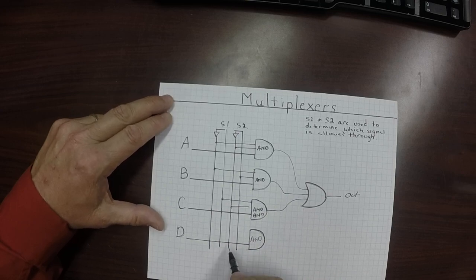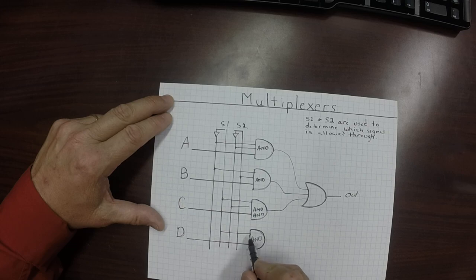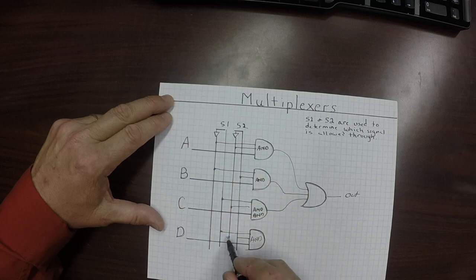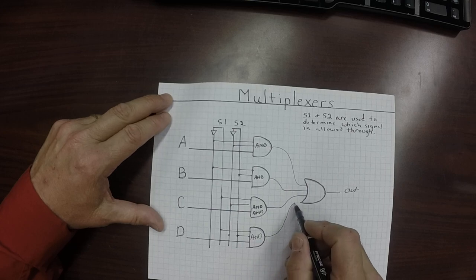Finally we have D and we want those to be 1 and 1. And when both S1 and S2 are 1's, then that will win and this AND gate will win out.